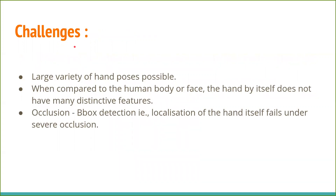Some of the challenges in this task are: there are a large variety of hand poses possible. When compared to the human body or face, the hand by itself does not have many distinctive features. For instance, consider the face which has features like the eyes, nose, or mouth, all of which are visually very different from each other. In comparison, the human hand does not have such distinctive features. Additionally, bounding box detection — that is, localization of the hand itself — fails under severe occlusion.